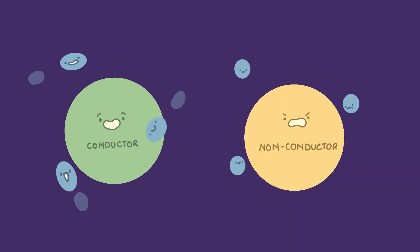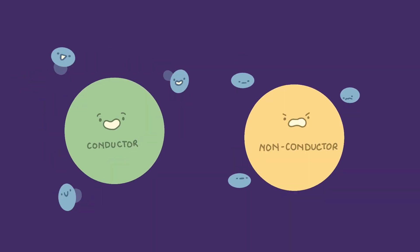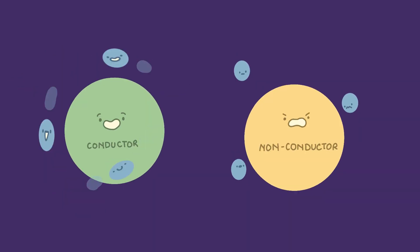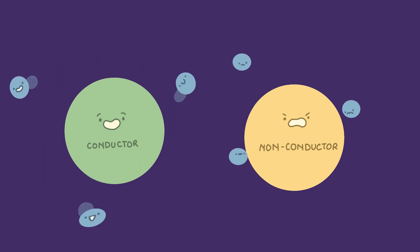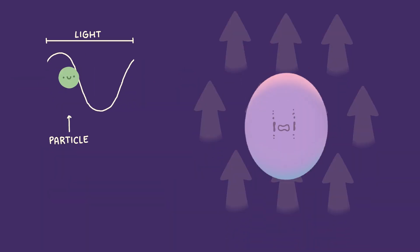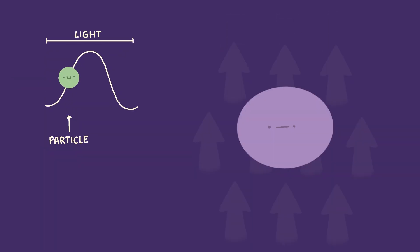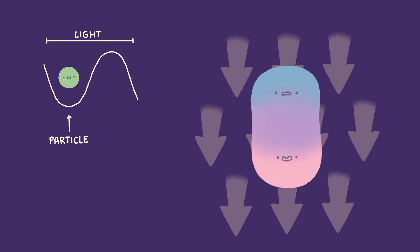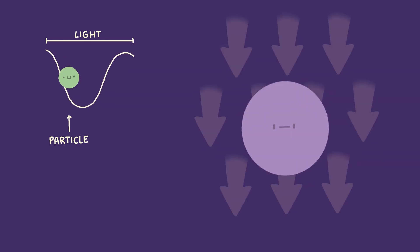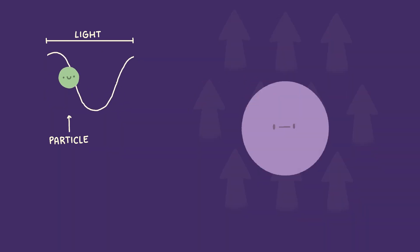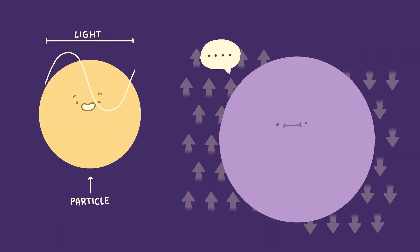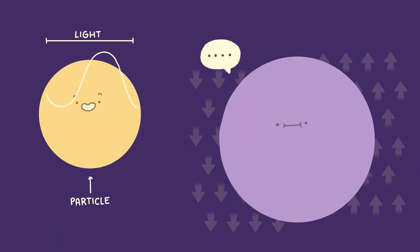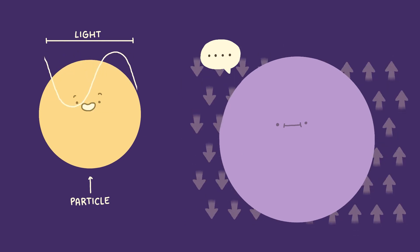Langmuir waves only occur for small conductive particles. Conductors have mobile electrons which can move more easily away from the nucleus. Particles smaller than the wavelength of light oscillate since they experience a uniform electric field that pulls all electrons in one direction and nuclei in the other, while larger particles can't since they don't experience the same electric field throughout.